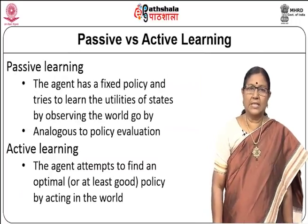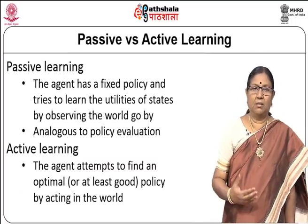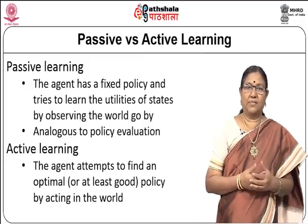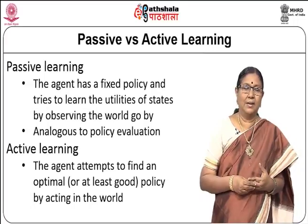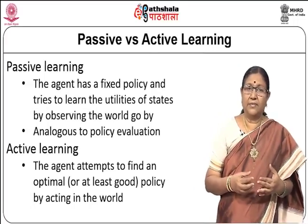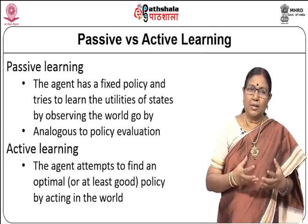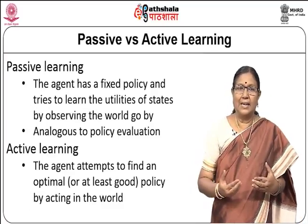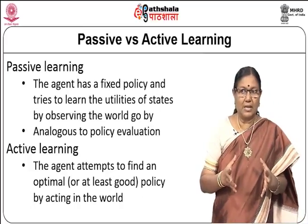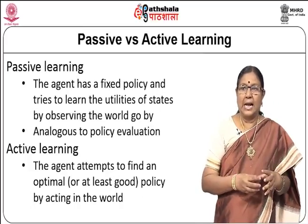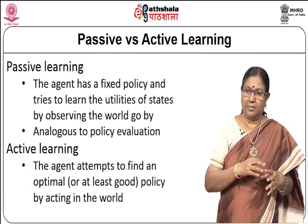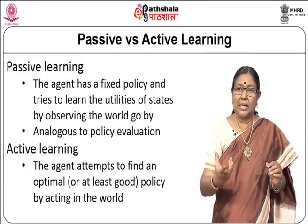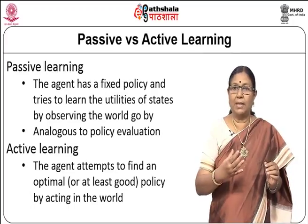Let us start with the definition of passive versus active learning. These are two types of reinforcement learning. In passive learning, the agent has a fixed policy and tries to learn the utilities of states by observing the world go by, and it is analogous to policy evaluation. Remember, in reinforcement learning, we have a state, we take an action based on that state, and we reach another state. So we are talking about learning the utilities of states so that we make the correct action.